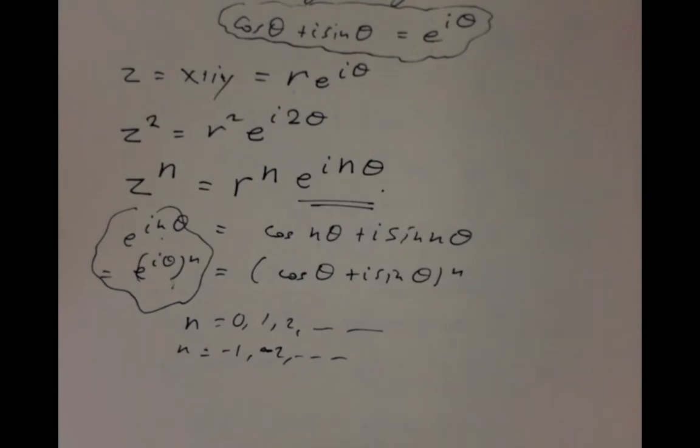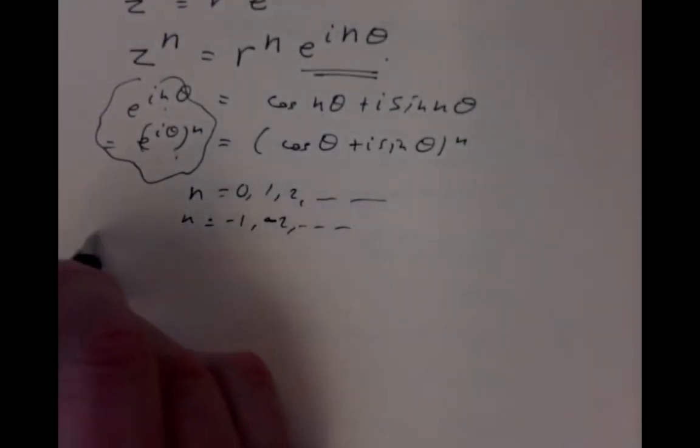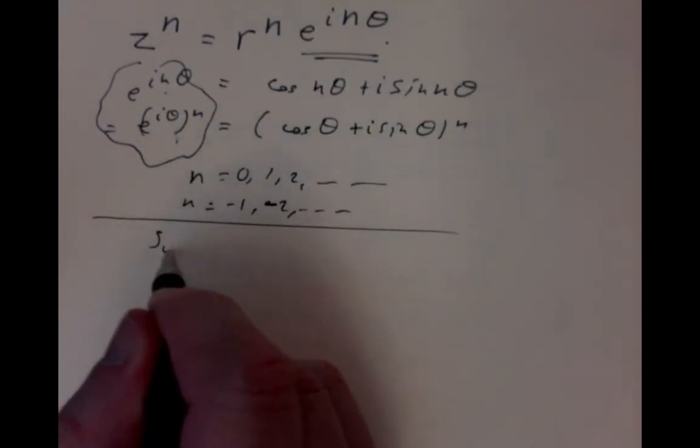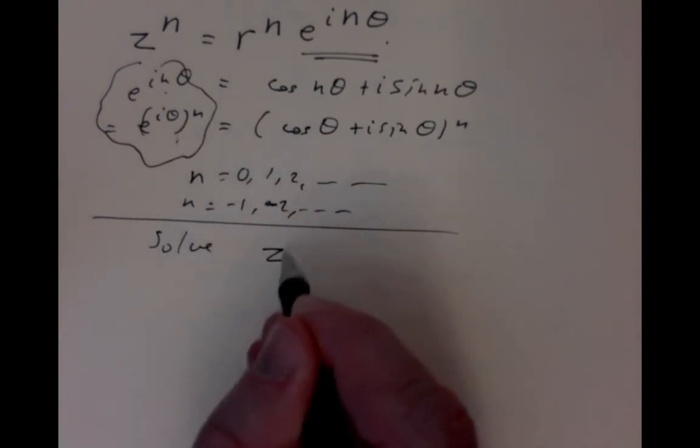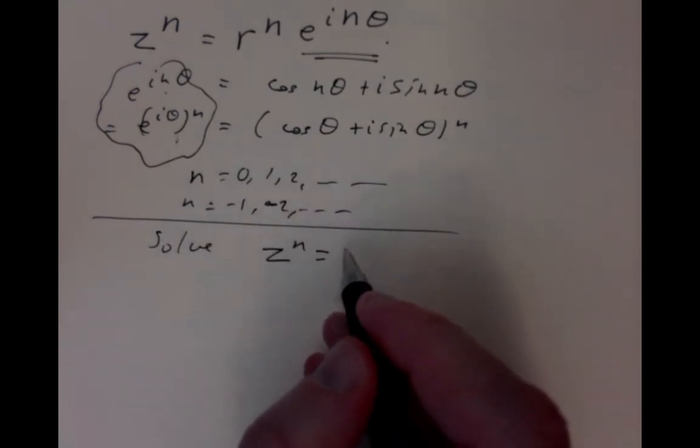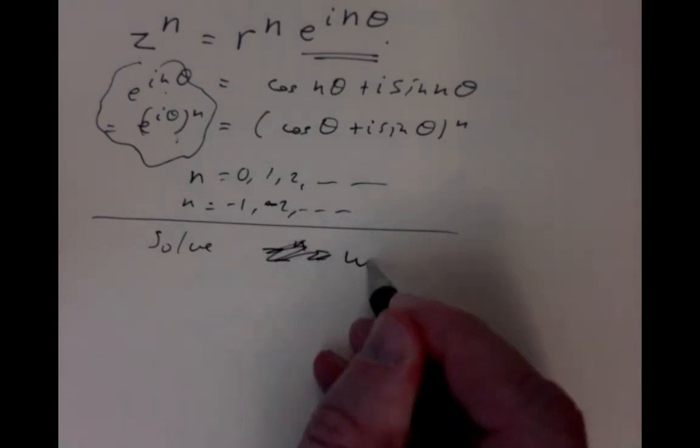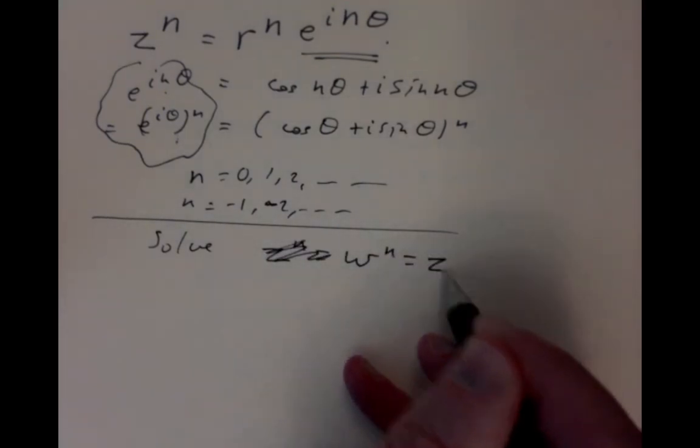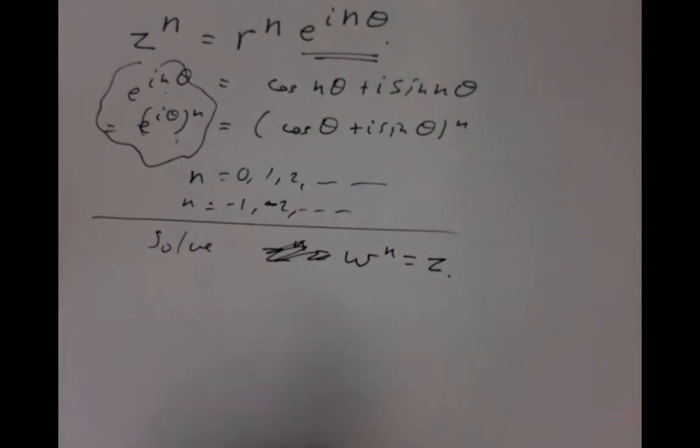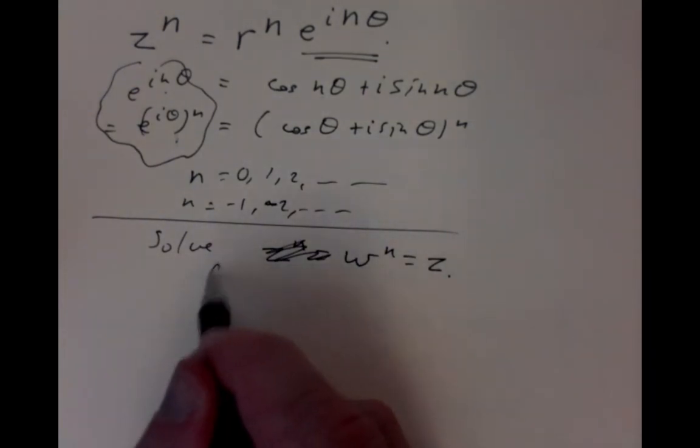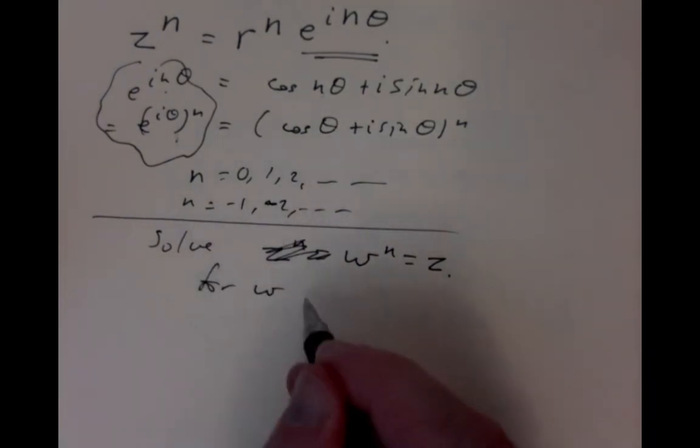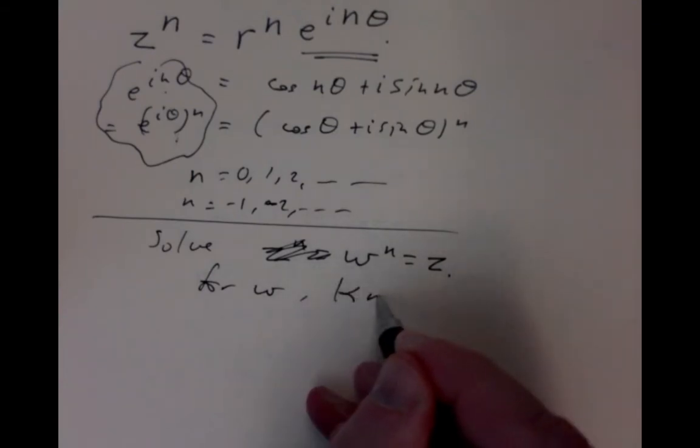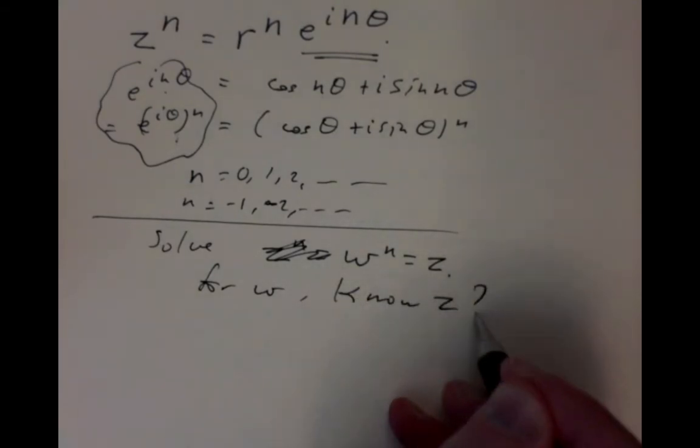We're interested in solving very simple equations. We want to solve something as simple as w to the n equals z. How could we solve for unknown w if we know z?